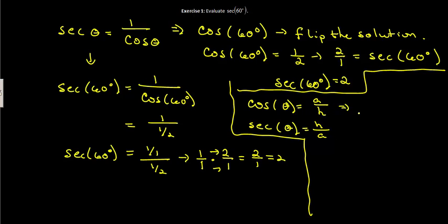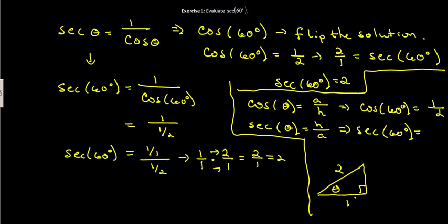So cosine of 60 degrees is 1 half. Which means if you draw that triangle out, you've got—so here's my theta here—we have a base length of 1 and a hypotenuse of 2.